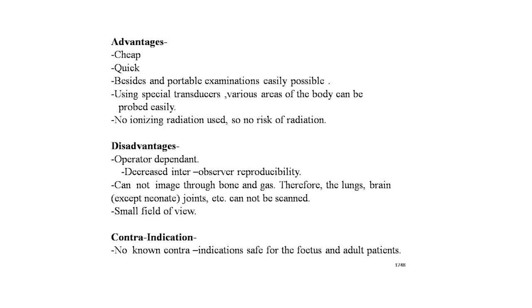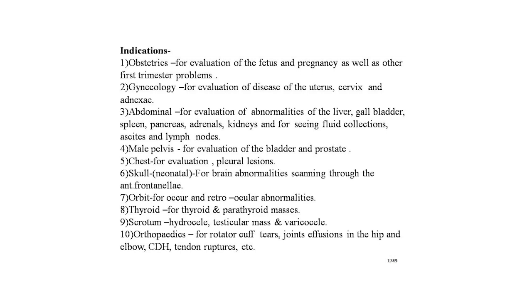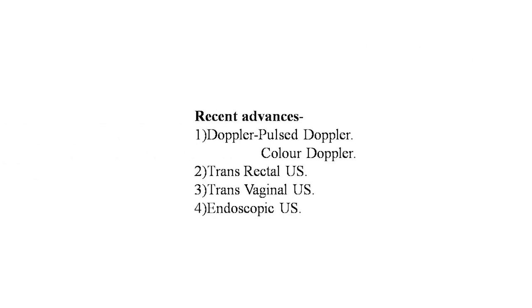Contraindications of ultrasonography: no known contraindications, save for specific fetal and adult patient considerations. Indications include: obstetrics for evaluation of the fetus and pregnancy; gynecology for evaluation of diseases of the uterus, cervix, and adnexa; abdomen for evaluation of the liver, gallbladder, spleen, pancreas, adrenals, and kidneys; fluid collections such as ascites; lymph nodes; male pelvis for bladder and prostate; chest for pleural effusion; neonatal skull for brain abnormalities; orbit for ocular and retro-ocular abnormalities; thyroid; and orthopedics for rotator cuff tears, joint effusion, CDH, and tendon ruptures.